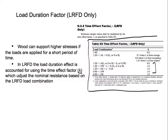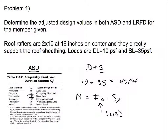Now let's do a problem: determine the adjusted design values in both ASD and LRFD for the member given. Roof rafters are 2x10, 16 inches on center, and they directly support the roof sheathing. Loads are: dead load 10 psf, snow load 35 psf. I have load combinations — dead, dead plus live, dead plus snow. Dead plus snow governs: 10 + 35 = 45 psf. The snow load is what's going to increase the stress in my structural member.